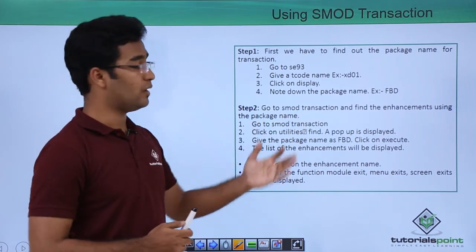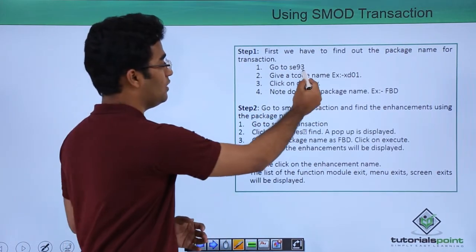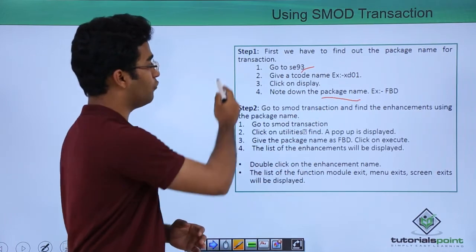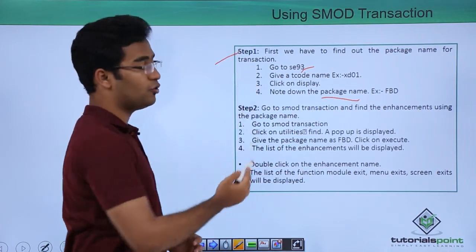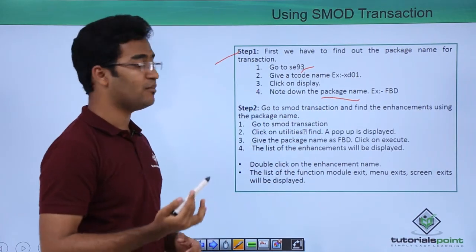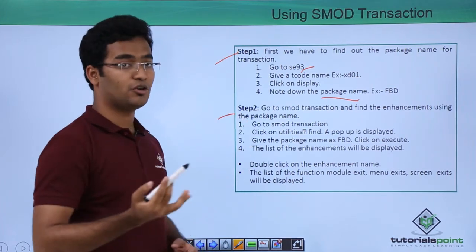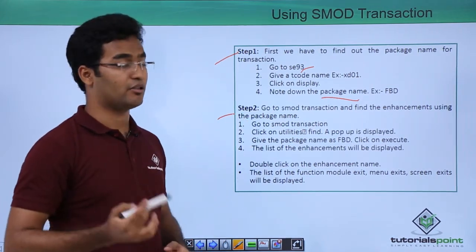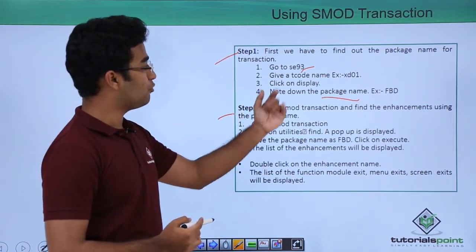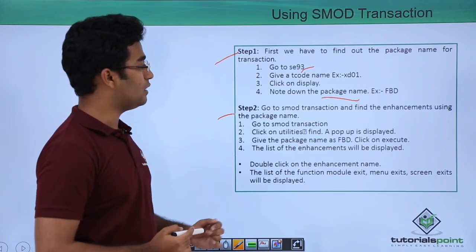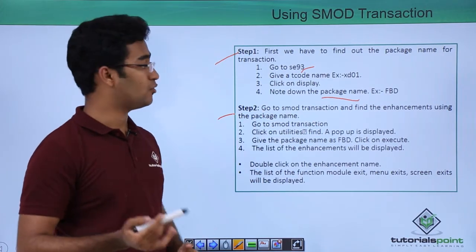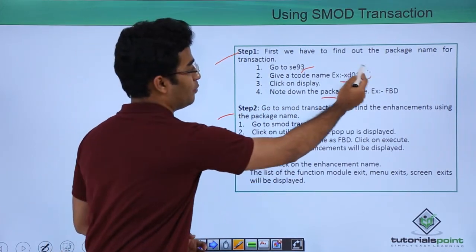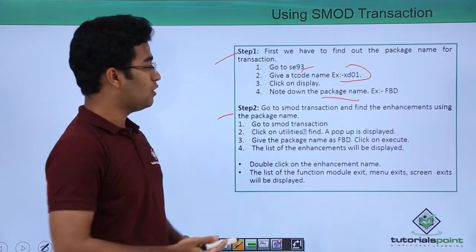For Method 2, the first step is to go to SE93 and find the package name. Based on the package name, we will find the enhancement name. For that, go to SE93 and give our transaction code name — let us suppose it is XD01.